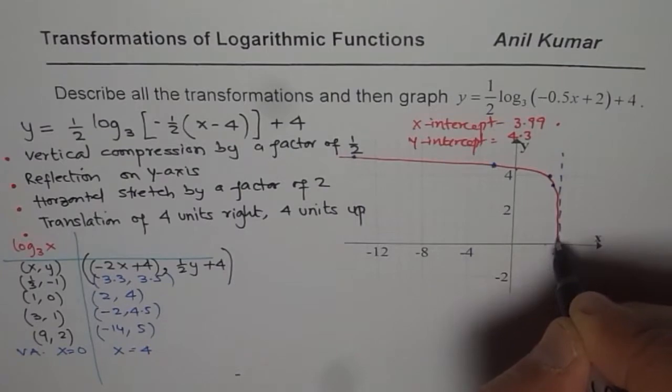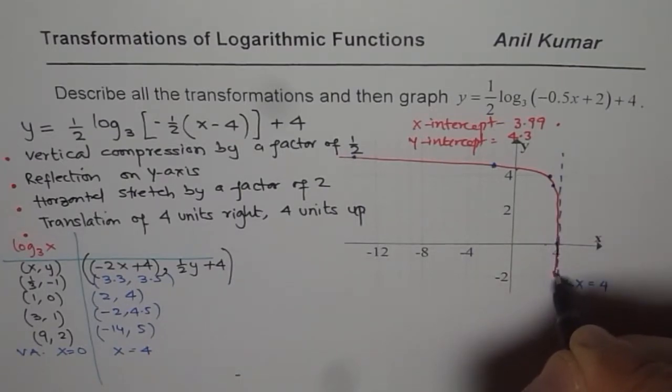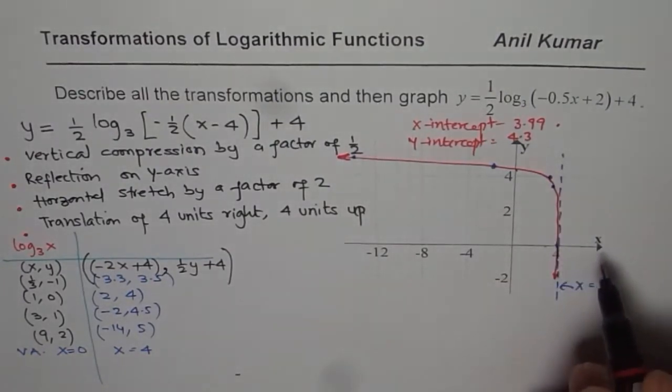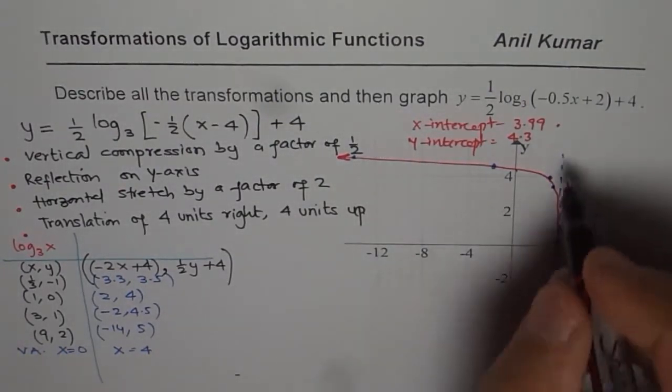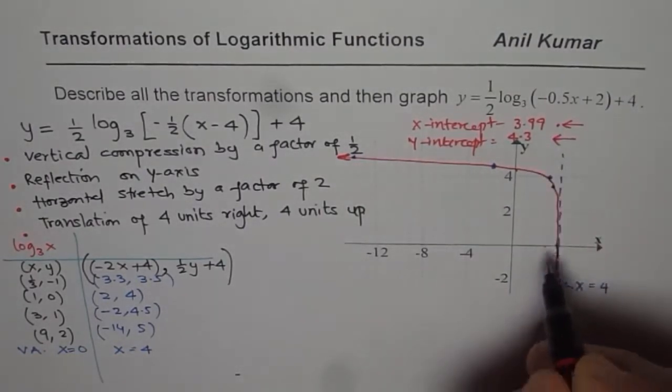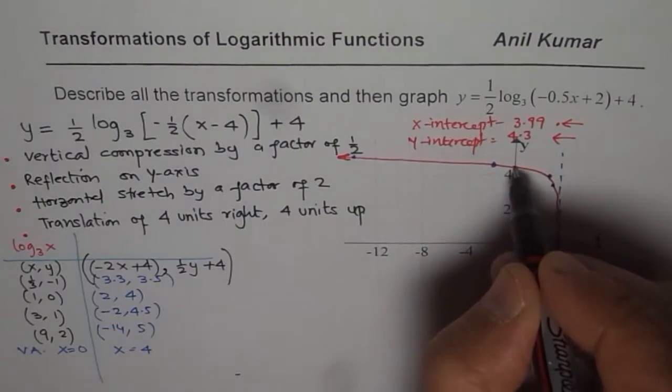So it's very steep here. It's indeed very, very close to vertical asymptote and goes like this. So that becomes the graph for our function. Now as I am telling you, the x-intercepts and y-intercepts are calculated in another part of the video.